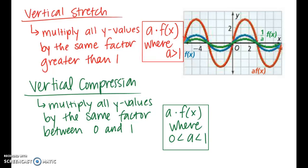Now let's move on to stretches and compressions, which are opposites of each other. For a vertical stretch, you multiply all of the y values by the same factor greater than 1, written as a times f(x) where a is greater than 1. You can see in the red graph that the graph is elongated or stretched out. The opposite is a compression, where you multiply all the y values by the same factor between 0 and 1 — a decimal or fraction between 0 and 1. In the graph, the green curve is visibly compressed or squished together.